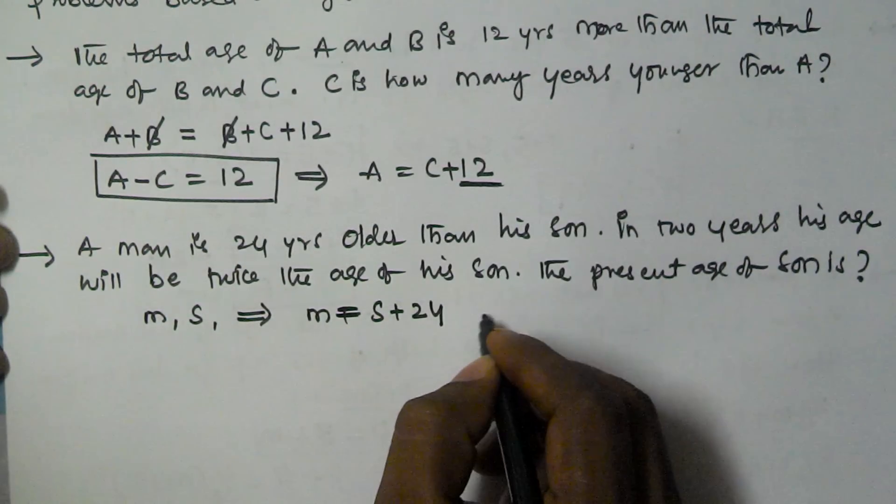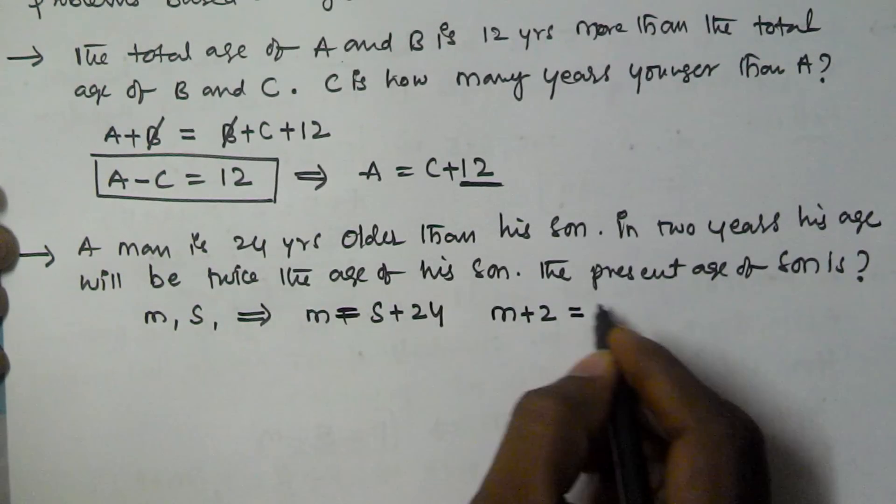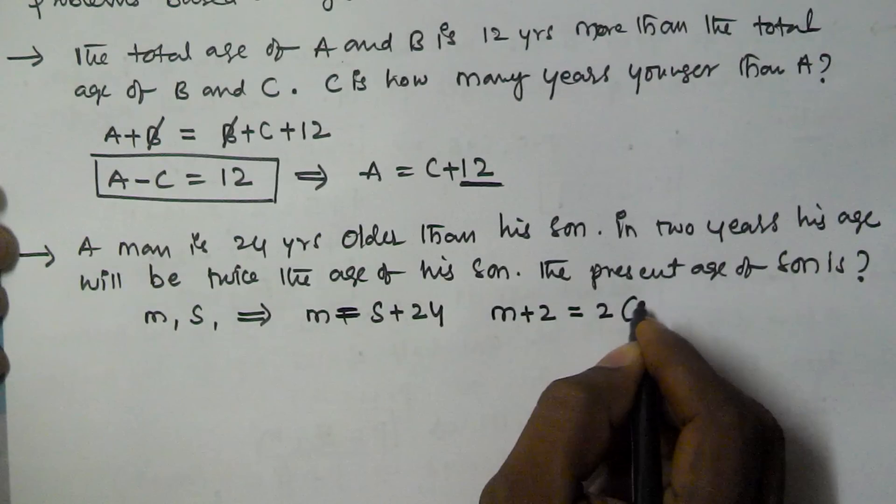In two years, that means after two years, the man's age is going to be M plus 2, which will be twice the age of the son, 2 times S plus 2.